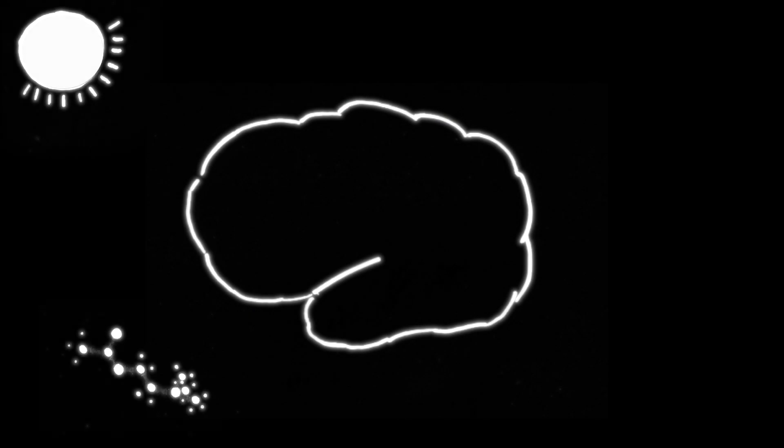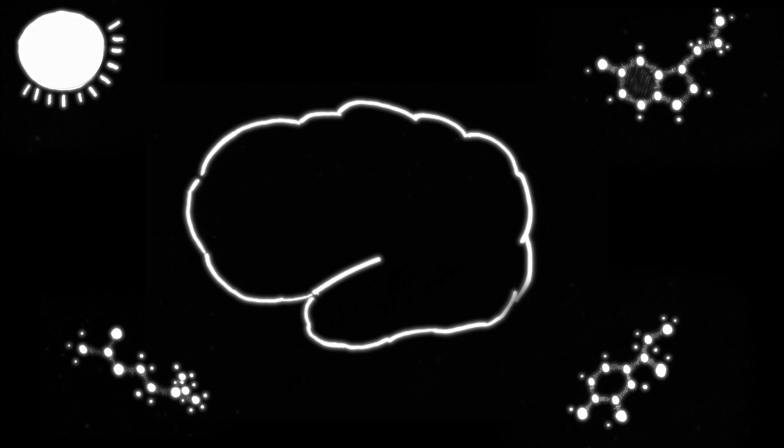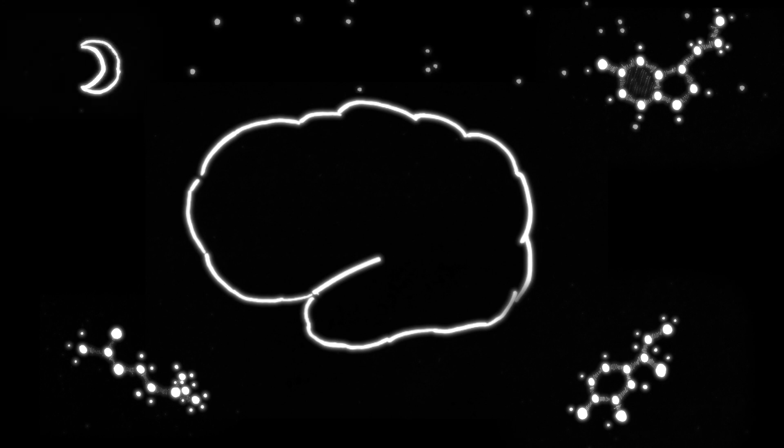This might seem a little counterintuitive, but during REM dreaming, we're conscious — but in a wonderfully strange way. It's because of the neurotransmitters being released into our brains. When we're fully awake, we have acetylcholine, serotonin, and noradrenaline sloshing around up there. But during REM dreaming, there's only acetylcholine.